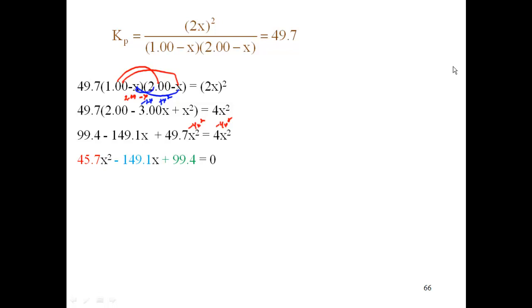And then I'm going to rearrange it into X² X, no X format. So I'll get 49.7 minus 4 gives me 45.7X², the negative 149.1X, and then the plus 99.4, all that is equal to 0. So I brought it all to one side, solving for my equation equal to 0.